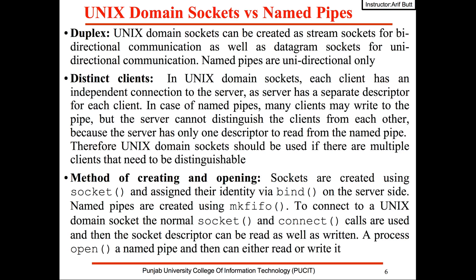This slide gives the comparison between Unix domain sockets and named pipes. The first difference is that Unix domain sockets can be created as stream sockets for bi-directional communication as well as datagram sockets for unidirectional communication. On the contrary, named pipes are unidirectional only.